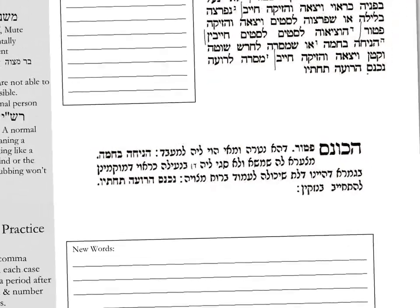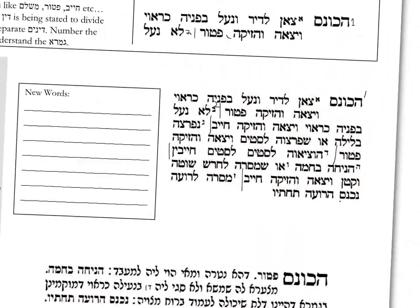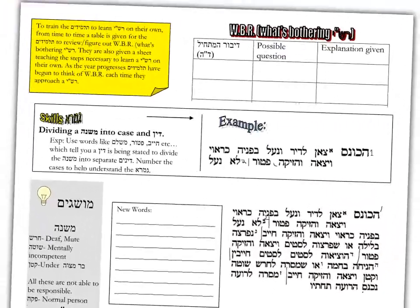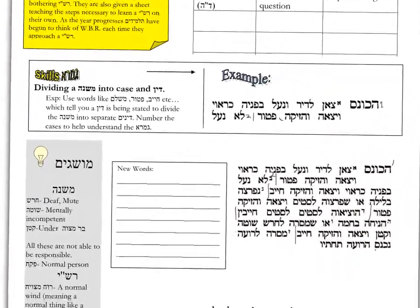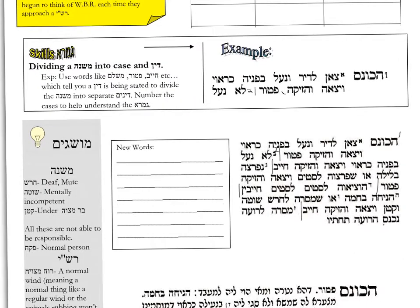In the first page of Akainas — the first Mishnah of Akainas, for example — a skill is taught to divide up a Mishnah, and students right away practice it in the text.